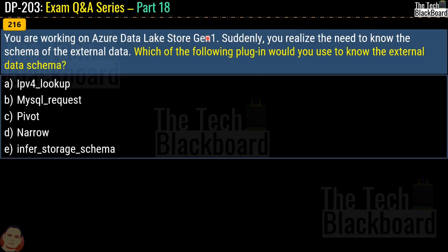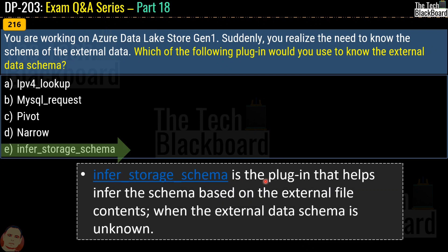Question 216 is the last question for part 18. You are working on Azure Data Lake Store Gen1 and need to know the schema of external data. Which plugin would you use to determine the external data schema? The options are: IPv4 lookup, MySQL request, pivot, narrow, and Infer Storage Schema. The correct answer is option E — Infer Storage Schema — because it is the plugin that infers the schema based on external file contents when the external data schema is unknown.